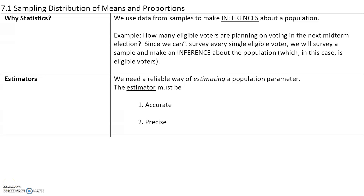In section 7.1, we will talk about the sampling distribution of means and proportions. We use data from samples to make inferences about a population. At the beginning of the semester, we talked about the fact that it's impractical, expensive, and inefficient to survey every single member of a population. So we gather data from a sample, and we use that data to make inferences or conclusions about a population.